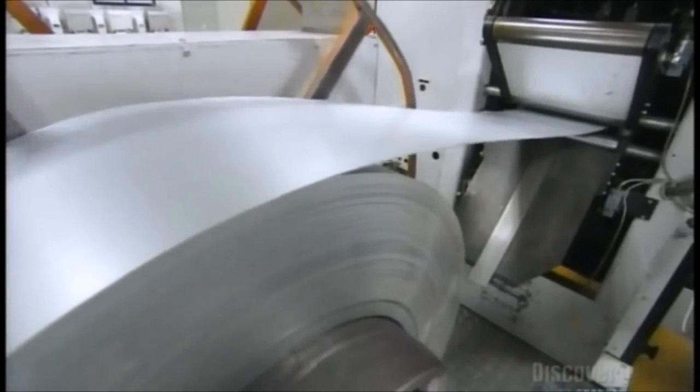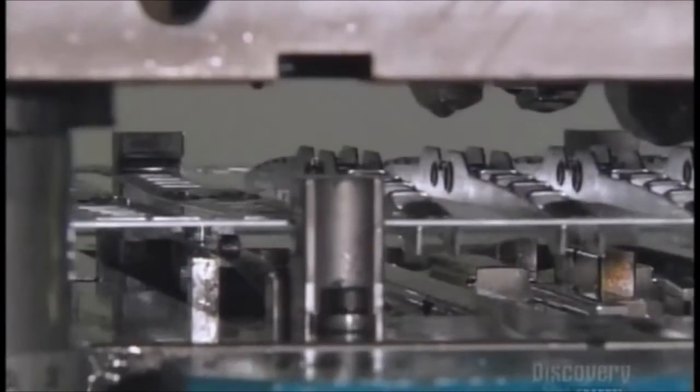This steel coil feeds into a stamping machine that repeatedly cuts and bends it to form brackets. These brackets connect the windshield wiper blades to the wiper arm and give them the shape they need to wipe on curved windshields.